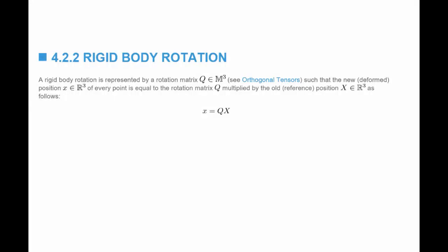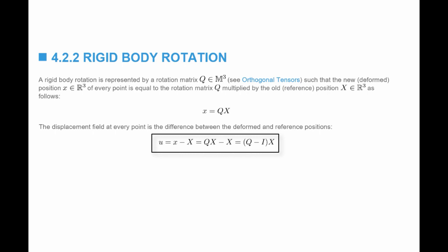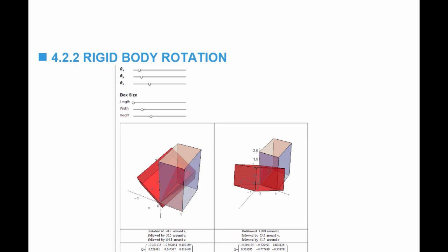The next simple example of deformation is rigid body rotation. A rigid body rotation is represented by a rotation matrix Q, a 3 by 3 rotation matrix. The new position x is equal to the rotation matrix multiplied by the original position capital X. The displacement function u equals the new position small x minus the original position capital X. Since small x equals QX, we get u equals Q minus I, multiplied by the vector X. On the website, you have a tool where you can specify three angles of rotation, and the tool will draw a box and overlap it with the box after rotation.